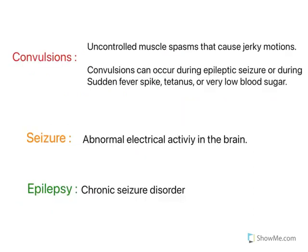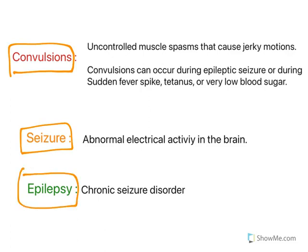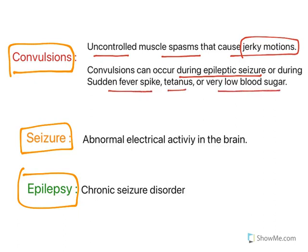Let's get into the topic. We need to understand the difference between convulsions, seizure and epilepsy. Convulsions are uncontrolled muscle spasms that cause jerky motions. Most of the time people get jerky motions with all bodily muscles contracting. These convulsions can occur during an epileptic seizure, or they could be because of a sudden fever spike, tetanus, or very low blood sugar level.